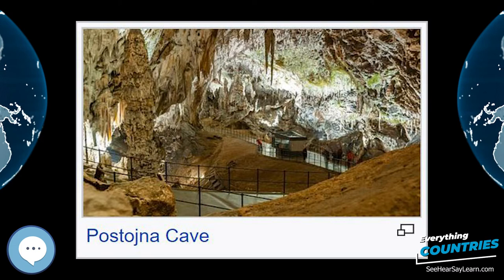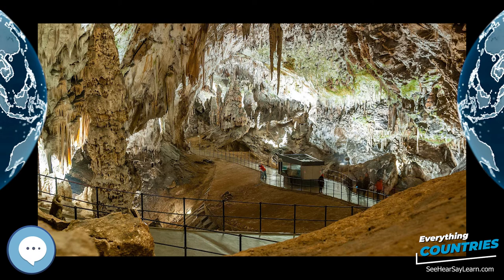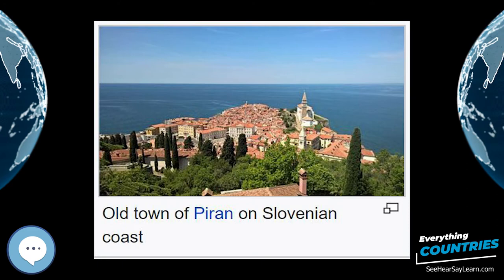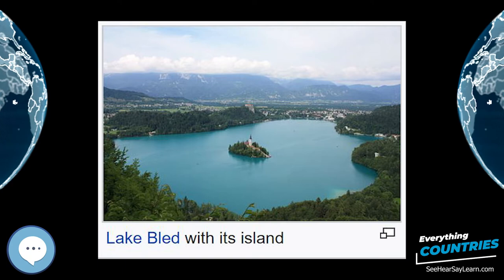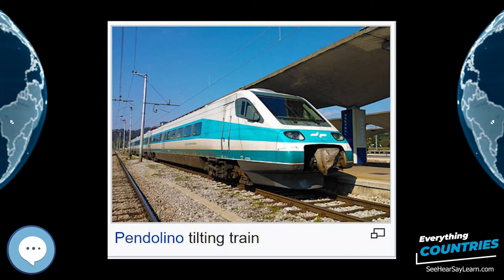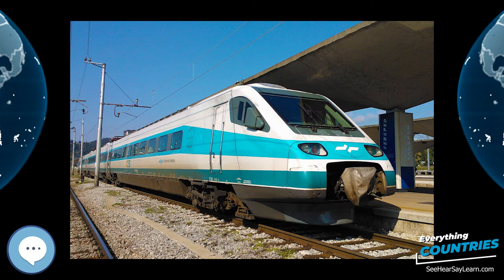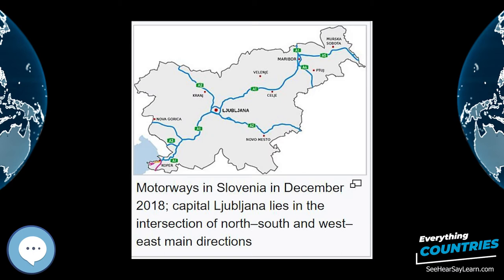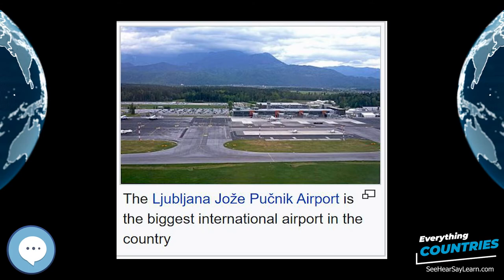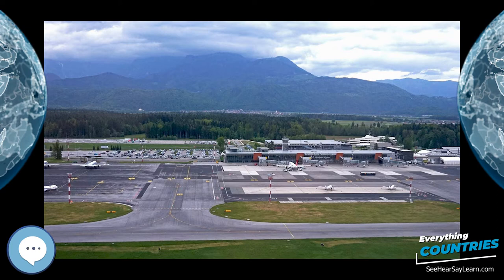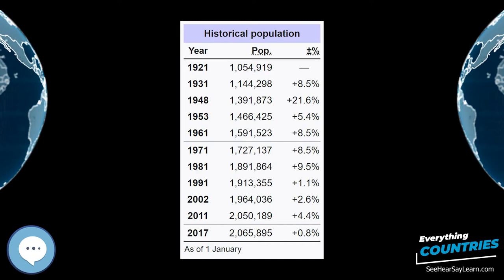Hungarian and Italian, spoken by the respective minorities, enjoy the status of official languages in the ethnically mixed regions along the Hungarian and Italian borders, with passports issued in those areas being bilingual. In 2002, around 0.2 percent spoke Italian and around 0.4 percent spoke Hungarian as their native language. Hungarian is co-official with Slovene in 30 settlements in five municipalities, and Italian is co-official in 25 settlements in four municipalities. Romani, spoken in 2002 as the native language by 0.2 percent of people, is a legally protected language. German, which used to be the largest minority language prior to World War II, is now the native language of only around 0.08 percent of the population.